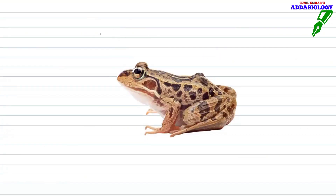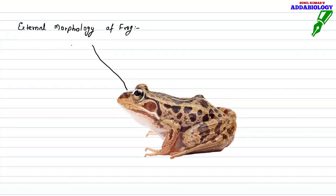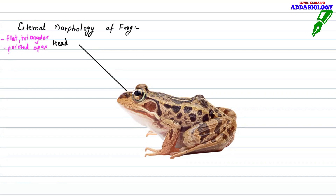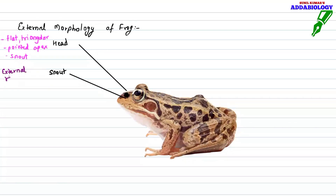Now with the help of a diagram we will study the external morphology. First, the head: it is flat, triangular in shape, and has a pointed apex. It has a snout — the nose part — and the external opening is called the external nare, which helps in breathing or exchange of gases when the frog is on land.